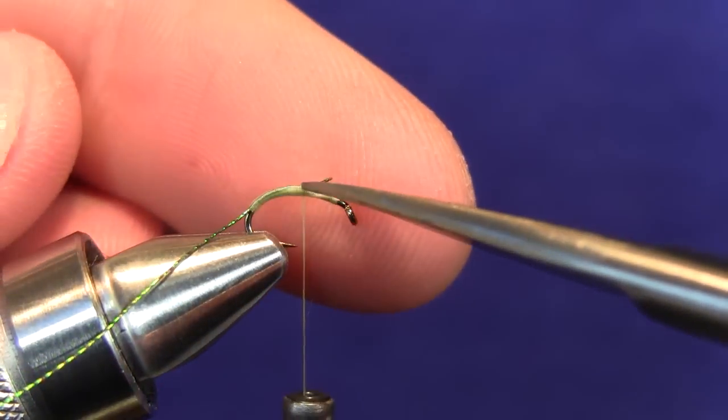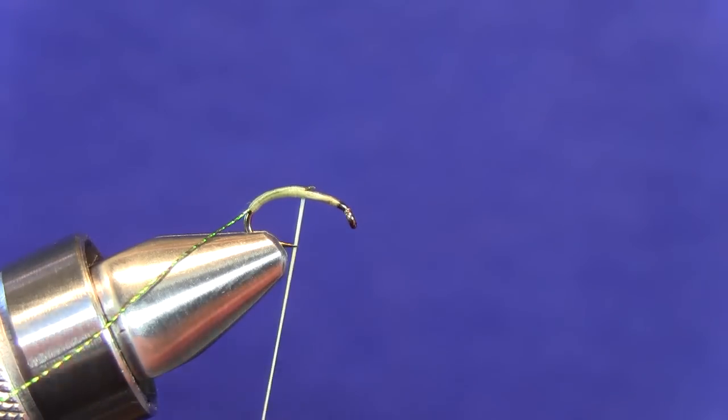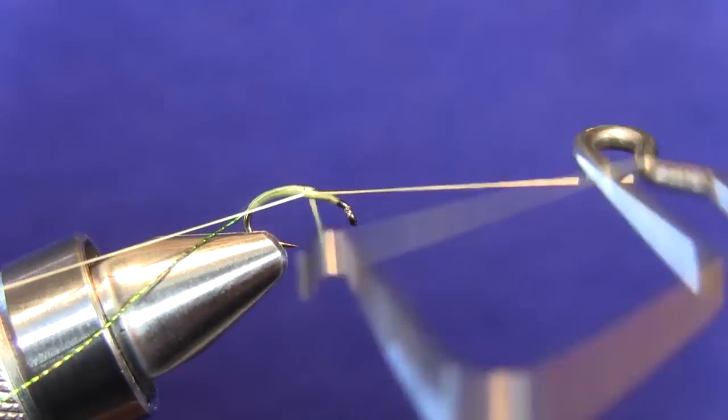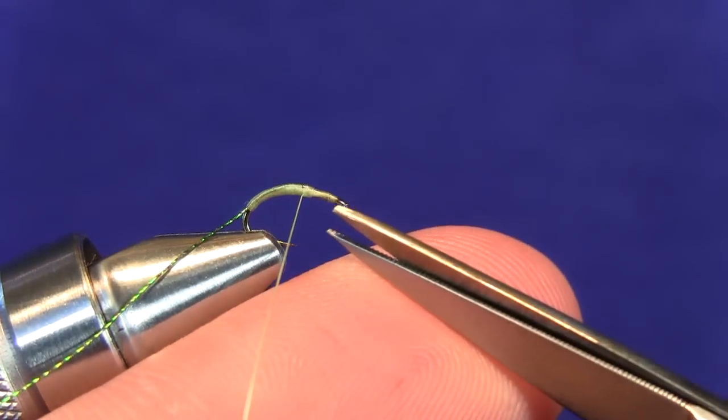Go ahead and take our scissors, clip out that tag piece, and now we're ready to take our whip finish and we're just going to finish out that watery olive thread. Take your scissors and clip out the tag end.